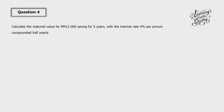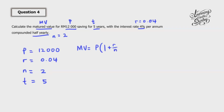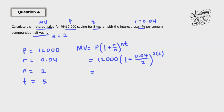Let's look at question number 4. Calculate the matured value for 12,000 ringgit saving for 5 years with interest rate 4% per annum, compounded half yearly. So P is 12,000, T is 5, R is 0.04, and half yearly means N equals 2. We list down: P is 12,000, R is 0.04, N is 2, T is 5. Substituting into the formula: MV equals 12,000 bracket 1 plus 0.04 over 2, to the power of 2 times 5. Let's calculate with a calculator.